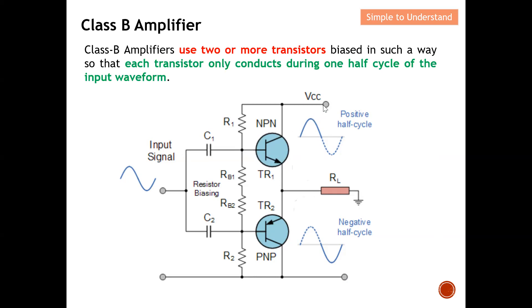For the NPN transistor, the collector current Ic flows and the transistor becomes a short circuit, appearing at the load — this transistor takes care of the positive half cycle. For the negative half cycle, the PNP transistor is turned on by the source and also becomes short circuit, taking care of the negative half cycle. In short, the NPN transistor handles the positive half cycle while the PNP handles the negative half cycle.